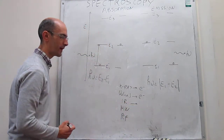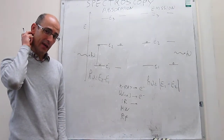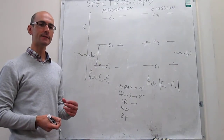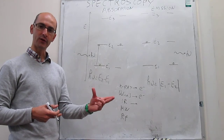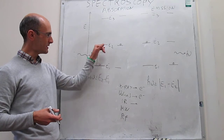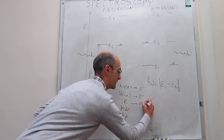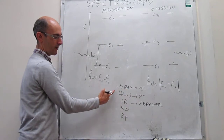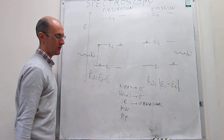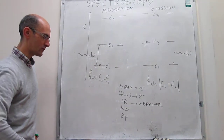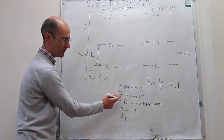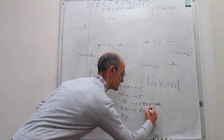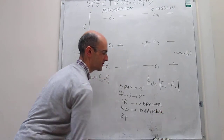In infrared spectroscopy, the energy is much lower than UV-Vis and X-ray, so you cannot promote any electronic transition. Instead, infrared energy is appropriate to excite molecular vibrations, so the transitions being promoted correspond to vibrational energy states. In microwave spectroscopy, you don't have enough energy to excite electrons or vibrations, but you do have enough energy to excite rotations — so the transitions are rotational.